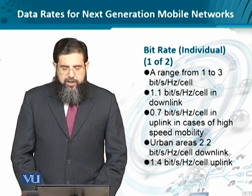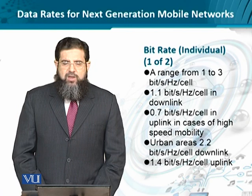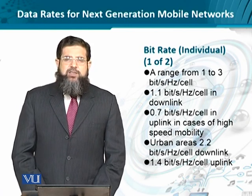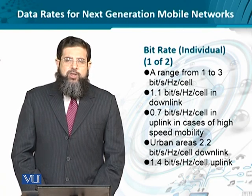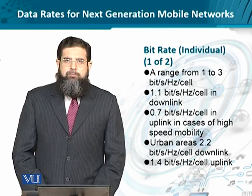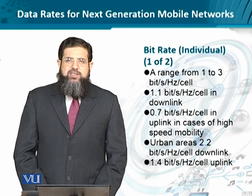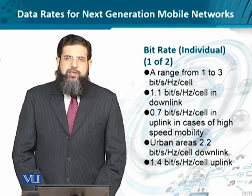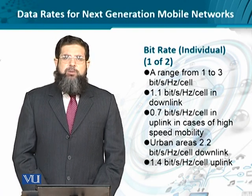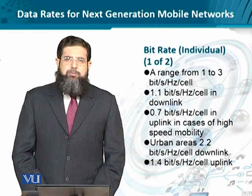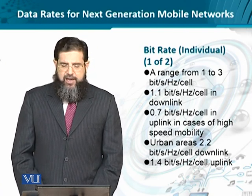Specifically, it is 1.1 bits per second per hertz in the downlink and 0.7 in the uplink. One may ask why it is higher in the downlink and lower in the uplink. It is because of the capacity and capability of the transmitting device. In the downlink, transmission is from the base station to the mobile station. In the uplink, it is from the mobile station, which is battery operated with limited transmit power. That is why the spectral efficiency expected from the uplink is less than that of the downlink.